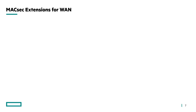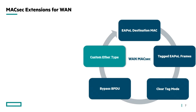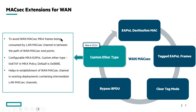What is new in the MACSEC extensions for WAN? WAN-MACSEC extends MACSEC security to the WAN and allows organizations to encrypt traffic between geographically distributed locations. In the 10.13 release, we introduced EAPOL destination map, tagged EAPOL frames, ClearTag mode, and Bypass BPDU. In this 10.14 release, the new addition is Custom EtherType.